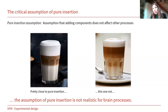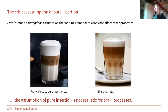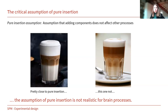Now let's come to the second challenge with cognitive subtraction: the assumption of pure insertion. The pure insertion assumption is illustrated by two latte macchiatos. The idea is that adding a component would not affect other components. In terms of the brain, it would mean adding a specific cognitive process to a task will not affect other processes going on. Translated to the latte macchiato: adding coffee will not affect the milk. The left latte is close to pure insertion, while on the right, adding coffee has already affected quite a lot of the milk — that is not pure insertion. I can tell you the brain is much more like the right latte macchiato.